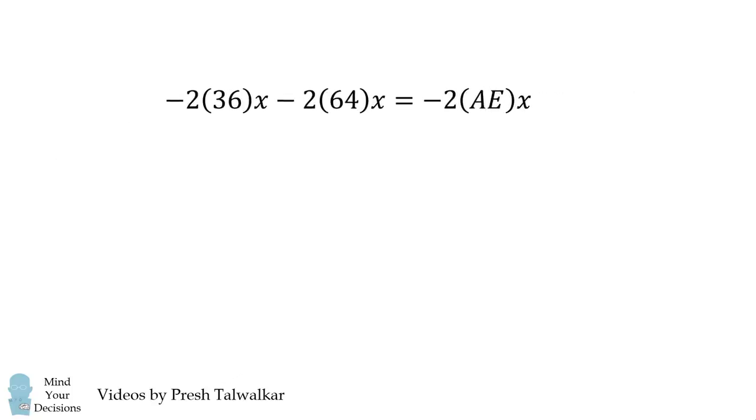So, our equation simplifies to the following form. We then factor out negative 2X on both sides. Since X is not equal to 0, it's a side length of the square, we can cancel out negative 2X on both sides. And we then get AE is equal to 36 plus 64, which is exactly equal to 100. And like magic, we've solved the problem once again.